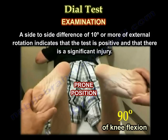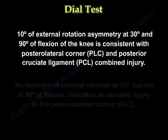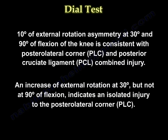A side-to-side difference of 10 degrees or more means the test is positive and indicates a significant injury. Ten degrees of external rotation asymmetry at both 30 and 90 degrees of knee flexion is consistent with a combined posterolateral corner and posterior cruciate ligament injury. Increased external rotation at 30 degrees but not at 90 degrees of flexion indicates an isolated injury to the posterolateral corner.